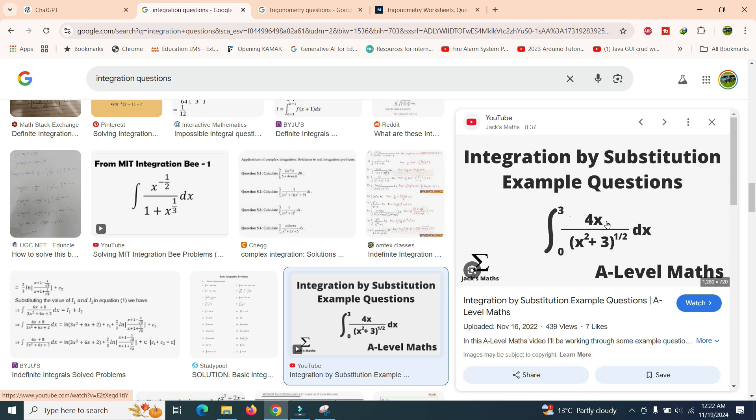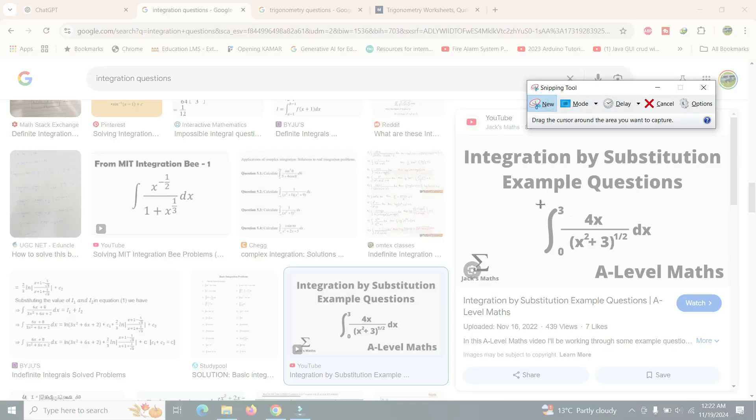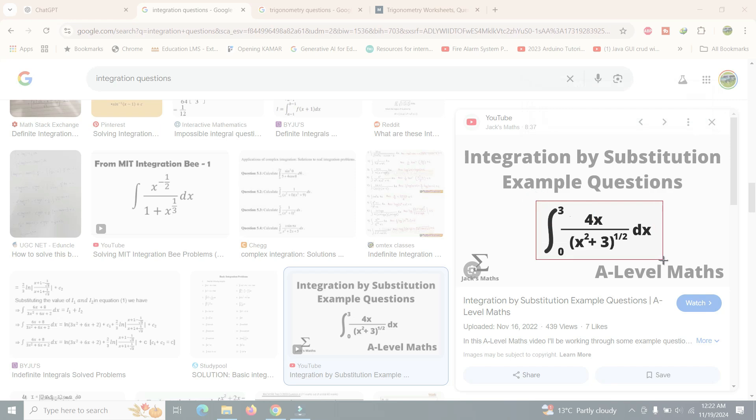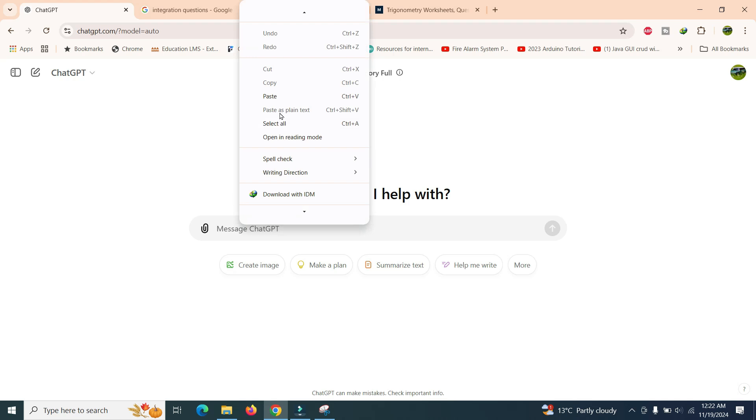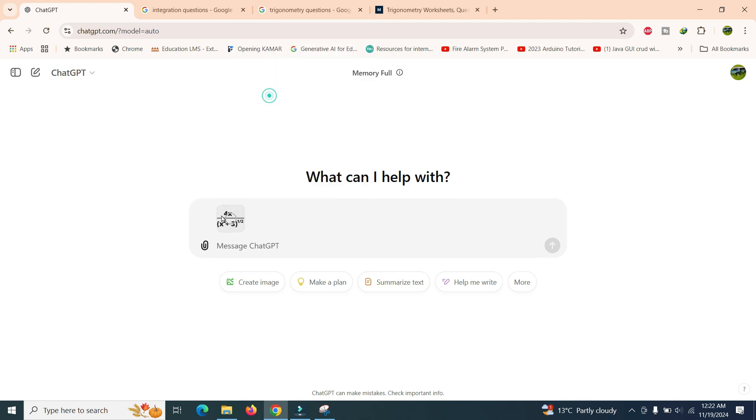For example, we want to solve this integration question. So all we have to do is open the snipping tool, click here on the question, go here, right-click and paste.